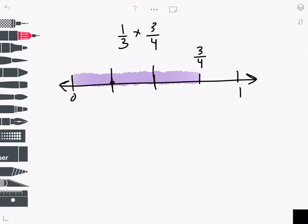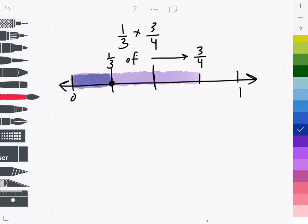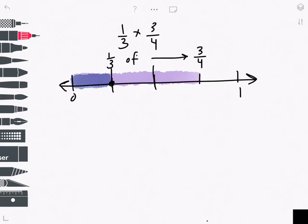I want to mark 1 third of 3 fourths, and I will highlight that length. And then I can name this point on the number line by looking at my whole.